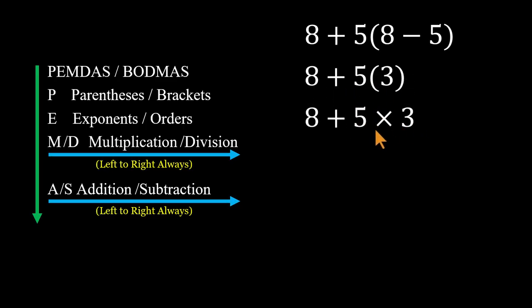Between addition and multiplication, multiplication takes priority. So 5 times 3 equals 15. And finally, 8 plus 15 equals 23.